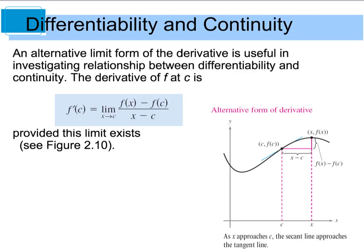An alternate limit form of the derivative is useful when we're trying to look at the relationship between differentiability and continuity. This alternate form tells us that the derivative of f is equal to the limit as x approaches c of f of x minus f of c divided by x minus c.